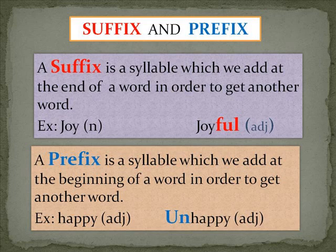What's a suffix and prefix? A suffix is a syllable we add at the end of a word to get another word. 'Joy' is a noun; adding 'ful' makes it 'joyful,' an adjective. A prefix is a syllable added at the beginning of a word. 'Happy' is an adjective, but adding 'un' — a prefix — makes it 'unhappy,' still an adjective.